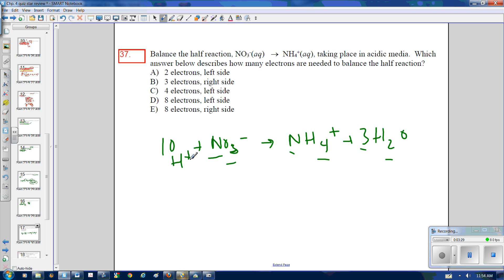So then when I go to balance charge, I'm going to end up with a charge of 1 on this side, a charge of 9 on this side. And then I'm going to need to balance charge. So how am I going to do that? I'm going to add 8 electrons, which will reduce this overall charge to 1. 8 electrons on the left-hand side. D is your correct answer. And you have the overall half reaction is balanced.